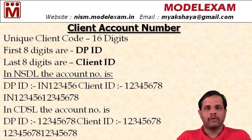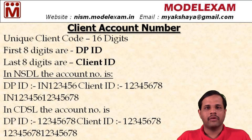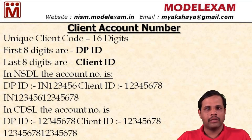Client account number — every client is given a unique 16-digit number. The first 8 digits stand for the DPID, that is the Depository Participant ID, which is the ID given to the DMAT account provider with whom the client has opened a DMAT account. The next 8 digits stand for the client ID, that is the ID given for that particular client. So these two put together form the client account number — first 8 digits DPID, next 8 digits client ID, totally 16 digits.